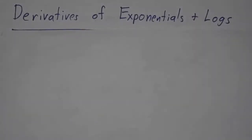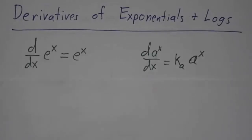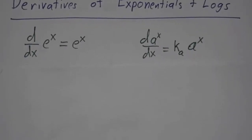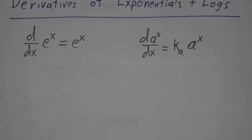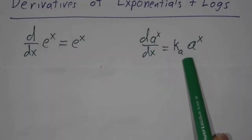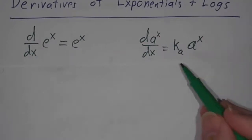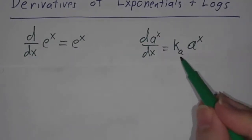In this video, we're going to go over the derivatives of the exponential and log functions. We've already seen exponentials. We know that the derivative of e to the x is e to the x, and the derivative of a to the x is some multiple of a to the x, where we have this mysterious number, k sub a, which we got as a crazy limit.